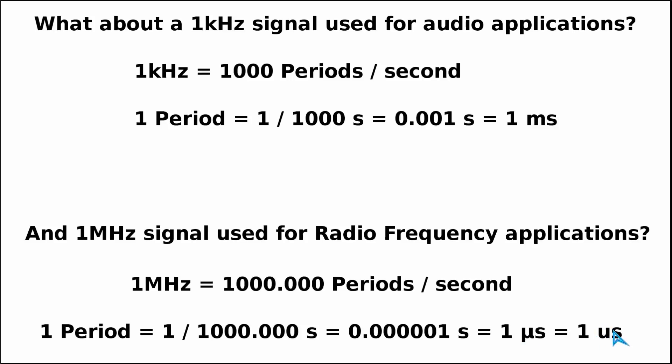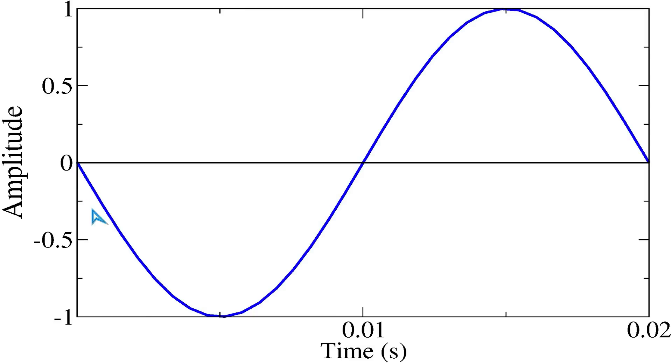Since it's not easy to write this Greek symbol in several text editors, often you'll find that people just write 'us' instead. When it comes to switch mode power supplies, the frequency range we use most of the time is between these two extremes—roughly in the upper audio frequency range and lower radio frequency range. This is why in most data sheets you might find things expressed in milliseconds or microseconds.